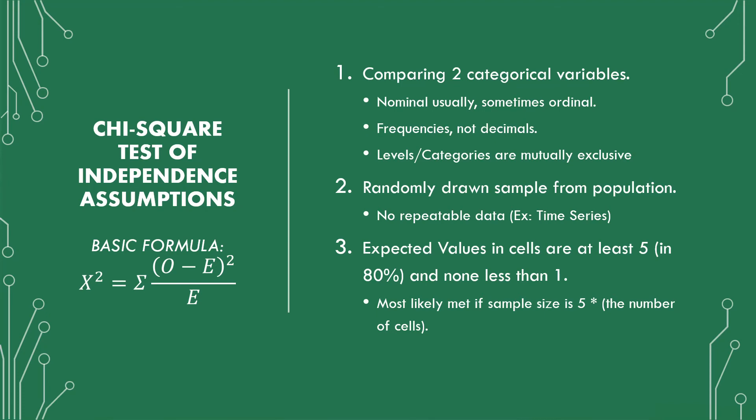So if you have 20 cells, you're going to have 100 as your minimum sample size. I have a video where I go over an example walking through the assumptions as well as doing the hypothesis testing for the chi-square test of independence. If you want to look at that, it will be somewhere on the video or in the description.